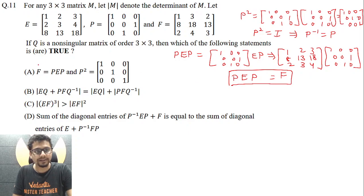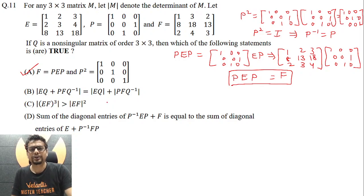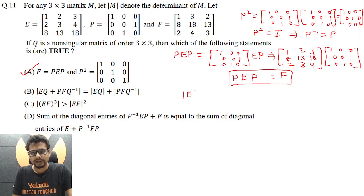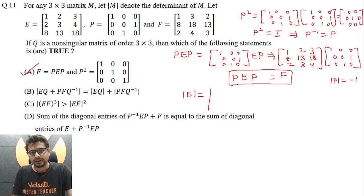So option A is correct. Now in options B and C we are talking about determinants. So what about the determinant of E, and then the determinant of F, since those terms are involved? The determinant of P clearly turns out to be −1.